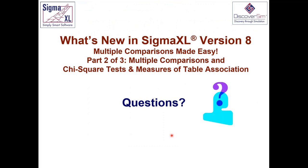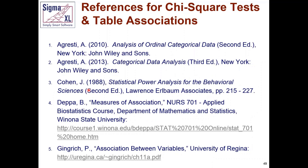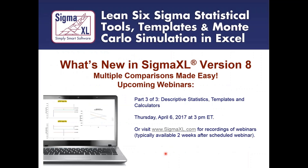That concludes our webinar covering multiple comparisons and chi-square tests. These are the references to the new features discussed today. The rules of thumb come from Cohen's Statistical Power Analysis. Also worth mentioning is DEPA — part of an online biostatistics course that covers table measures of association for both ordinal and nominal categories — and an article by Gingrich, both useful references for further information on table associations. Thank you all very much for your participation.